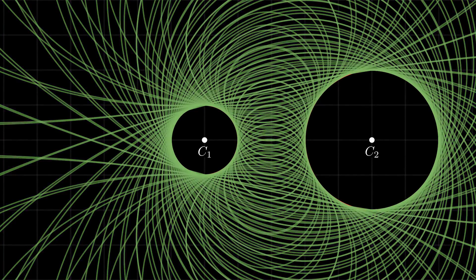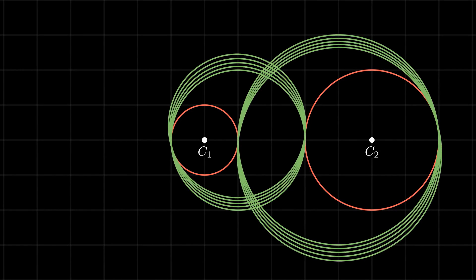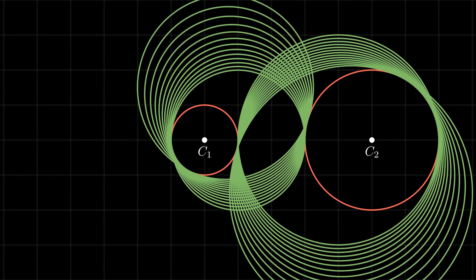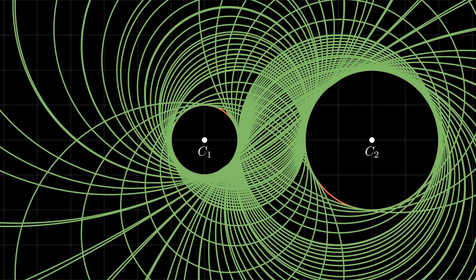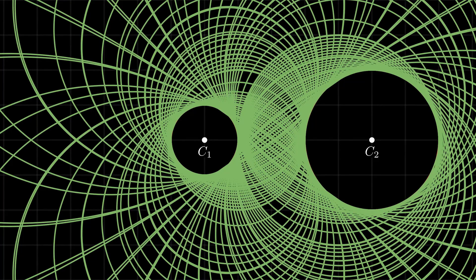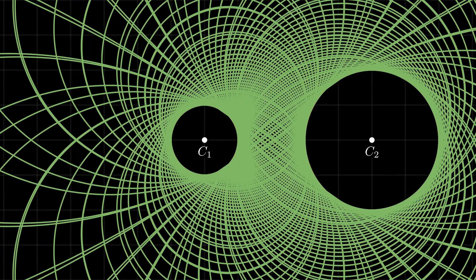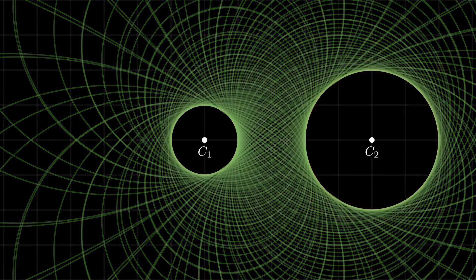We now see how each of the homothetic centers creates its own family of circles tangent to any given pair. Given a third circle, each of these families represents the potential circles that solve the Apollonius problem. The key idea is that the homothetic center lies on the radical axis of any two circles from its own family — that is, its power with respect to any circle of its own family remains the same.